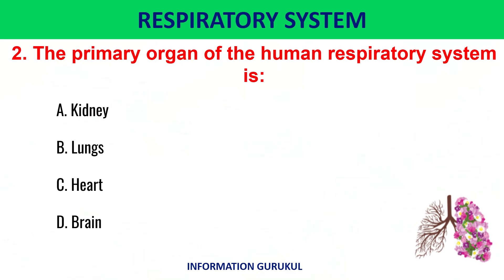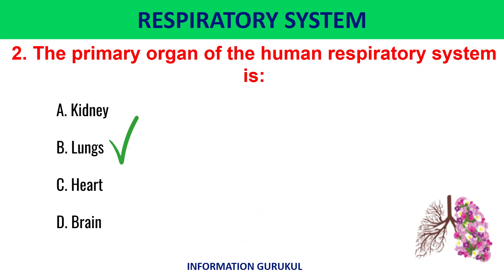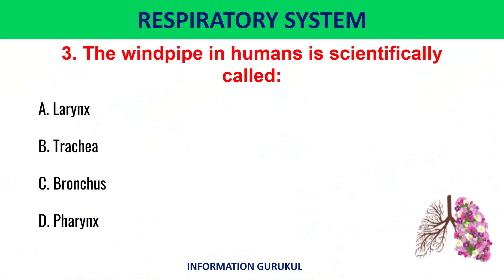The lungs are enclosed by a double-layered sac. Answer: Lungs. The windpipe in humans is scientifically called the trachea.